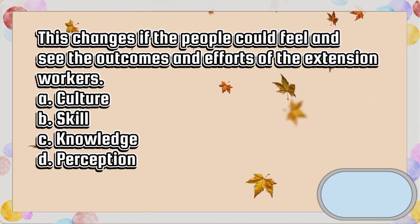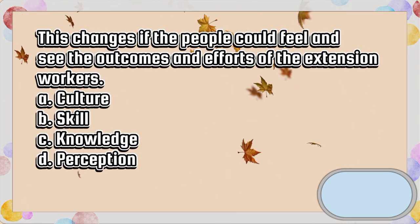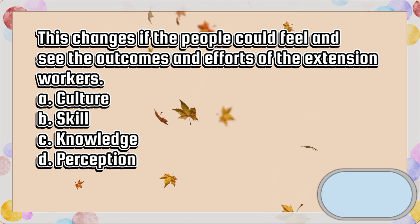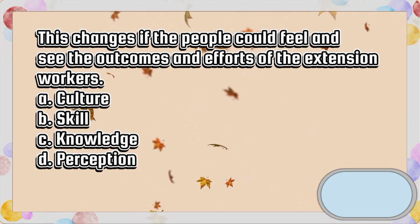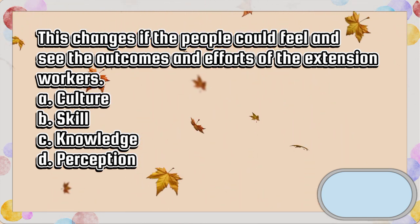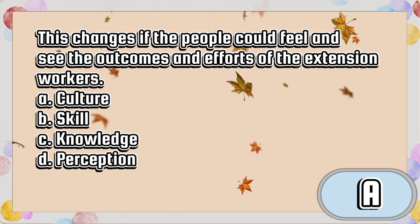This changes if the people could feel and see the outcomes and efforts of the extension workers. A. Culture. B. Skill. C. Knowledge. D. Perception. The answer is letter A.